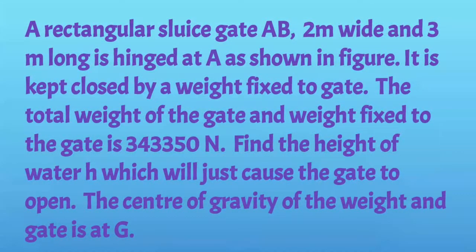A rectangular fluid gate AB, 2 meter wide and 3 meter long, is hinged at A as shown in figure. It is kept closed by a weight fixed to the gate. The total weight of the gate and the weight fixed to the gate is 3,43,350 N. Find the height of water which will just cause the gate to open. The center of gravity of the weight and the gate is at G.